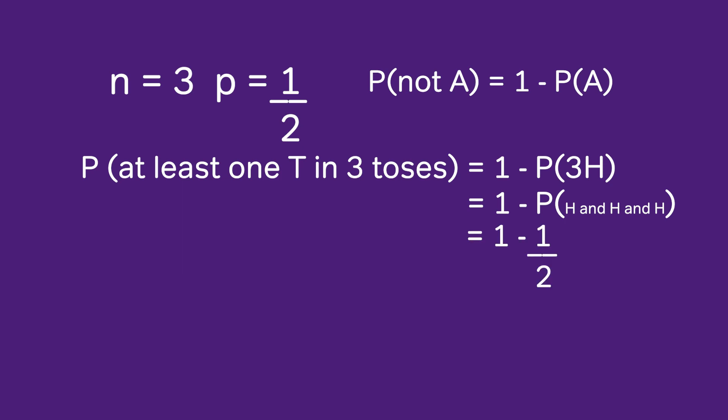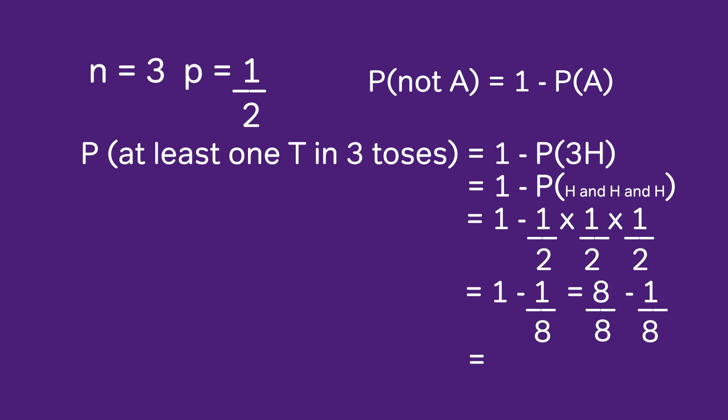You may remember that the word 'and' in probability means multiply. So this would be one minus one-half times one-half times one-half. That is one minus one-eighth. Changing that to eight over eight minus one over eight, we get seven over eight. Seven over eight is the probability of getting at least one tail in three tosses.